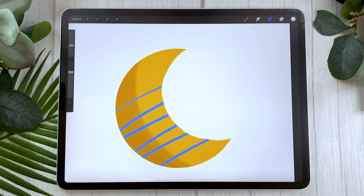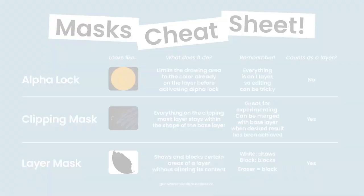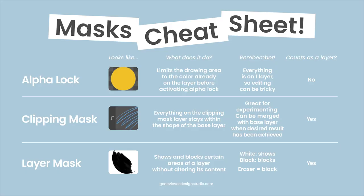Speaking of which, let's look at an example workflow you might want to use in your own illustrations using alpha lock, masks, and clipping masks. But right before that, here's the famous cheat sheet I was telling you about — feel free to screenshot it, and there's also a link to download it in the description below.